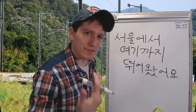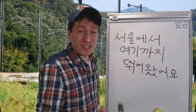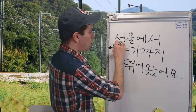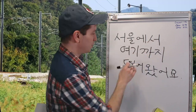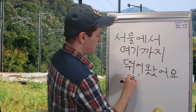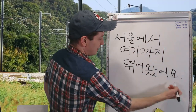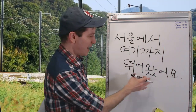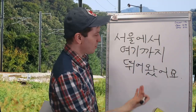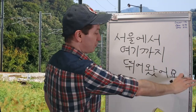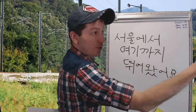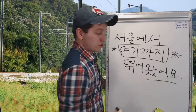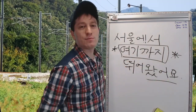Let's do another example. Whenever there's a direction, you need to use either the 가다 or 오다 ending for an action verb. 서울에서, from Seoul, 여기까지, to here, 뛰어왔어요 — I ran here from Seoul. So 서울에서 여기까지 뛰어왔어요 means I ran here from Seoul.